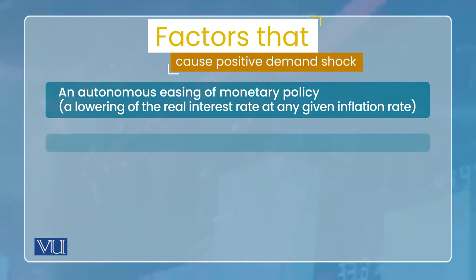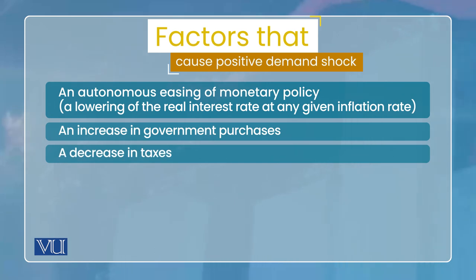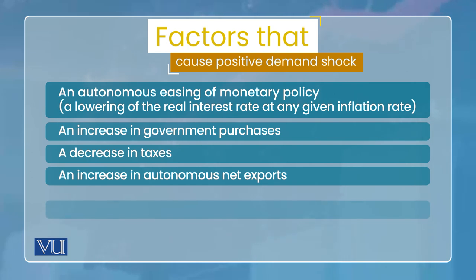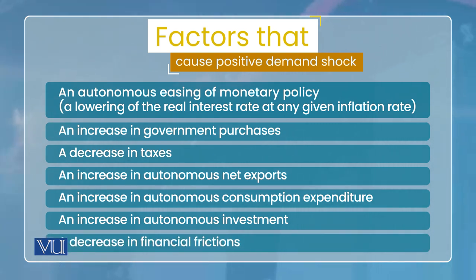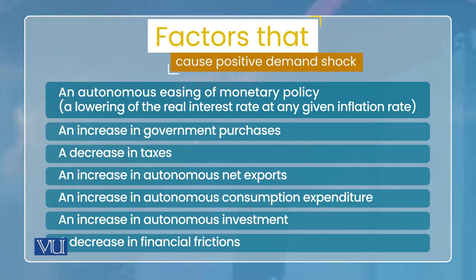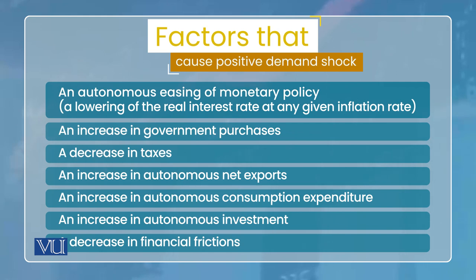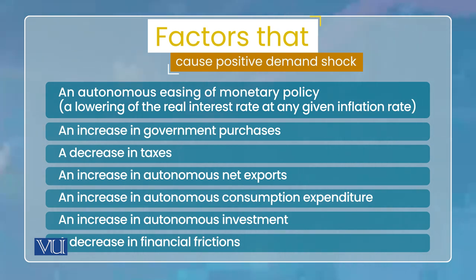In mein shaamil hai: autonomous easing ya contraction of monetary policy, yani ke central bank agar autonomous part jo interest rate ka hai use increase kare - matlab inflation rate ki wajah se nahi, aise hi interest rate ko increase ya decrease kare. Agar decrease kare to ye easy ya expansionary policy hogi. Isi tarike se agar aapke consumption expenditure mein autonomous component mein positive change aa jaaye, government ke consumption mein increase aa jaaye, ya investment expenditure ka autonomous part increase ho jaaye, ya net exports ka autonomous part increase ho jaaye, ya financial frictions kam ho jaayein, ya taxes jo lagte hain unse disposable income kam hoti hai to wo taxes kam ho jaayein taake disposable income increase ho jaaye.